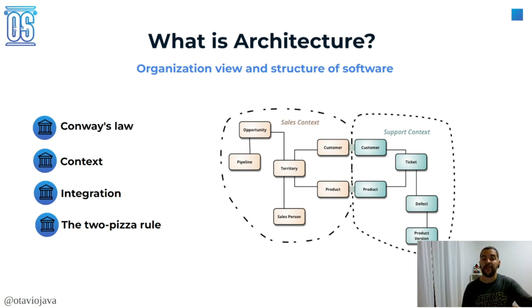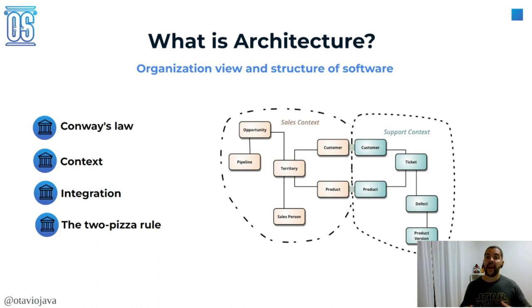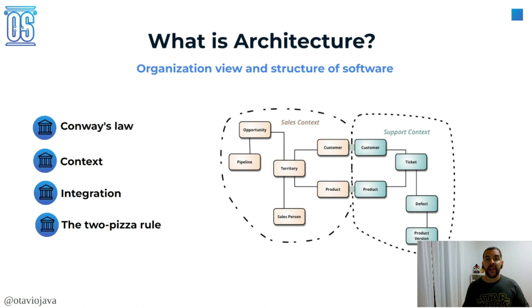Especially when talking about strategic points inside software — in DDD, I'm talking about bounded context, context map, and ubiquitous language. And the integration between teams: for example, if I have an organization with 100 engineers, it doesn't make sense to have a single team. I need to break it down into small pieces, like squads or by specialization. If I decide to go by specialization, my mobile team and my backend team should be capable of communicating with each other.